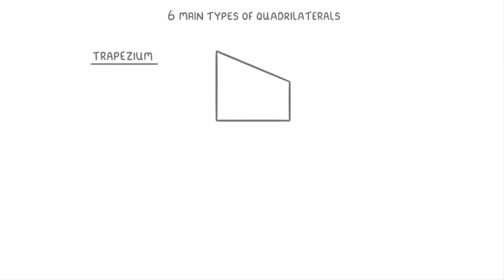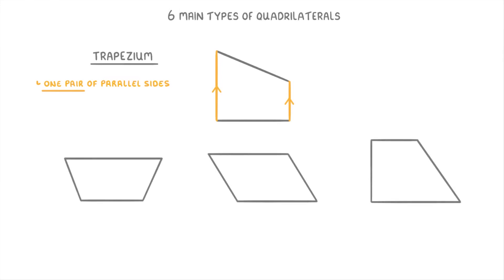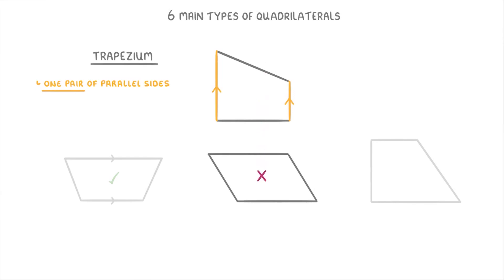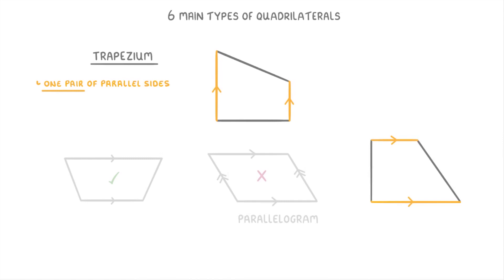A trapezium is any quadrilateral that only has one pair of parallel sides, and they can often be quite hard to spot. Looking at three example shapes: the first one counts as a trapezium because two sides are parallel but the other two aren't — so it only has one pair of parallel sides. The second shape isn't a trapezium because both pairs of opposite sides are parallel, making it a parallelogram instead. The third shape has only one pair of parallel sides, so it is a trapezium. Trapeziums have no symmetry of any kind — no lines of symmetry and no rotational symmetry.